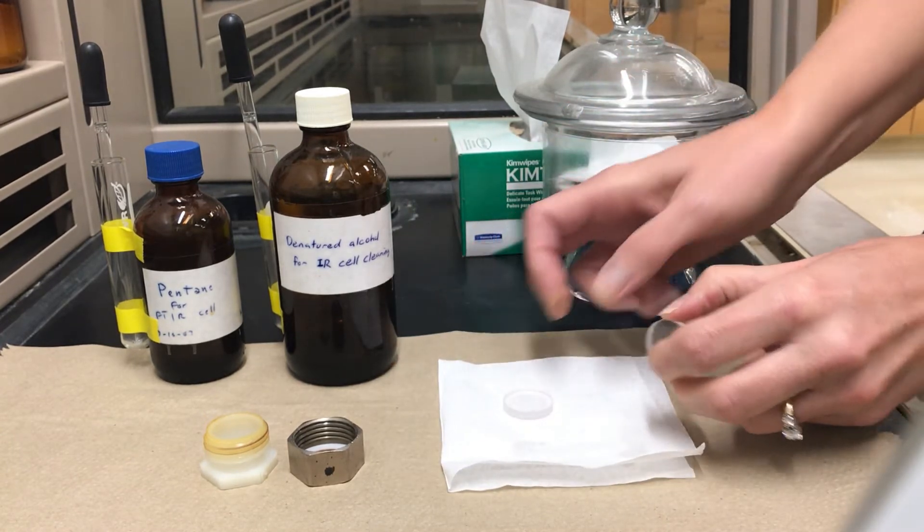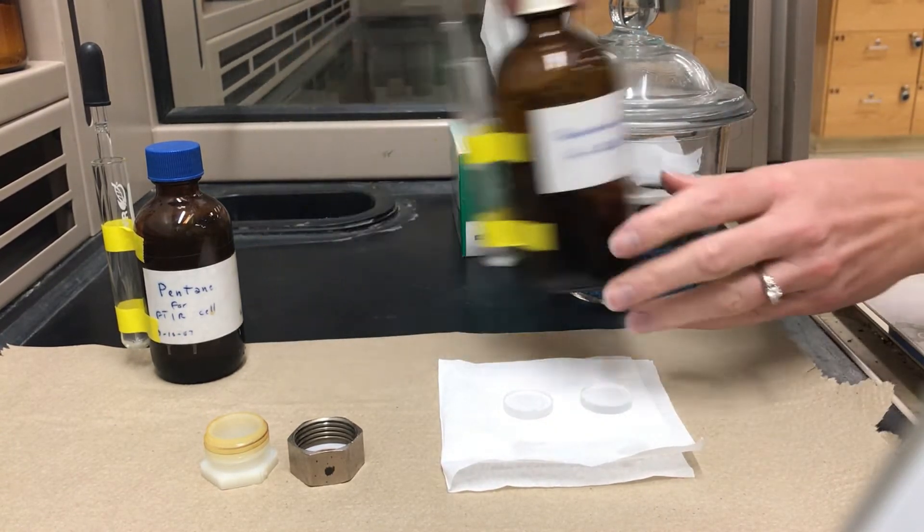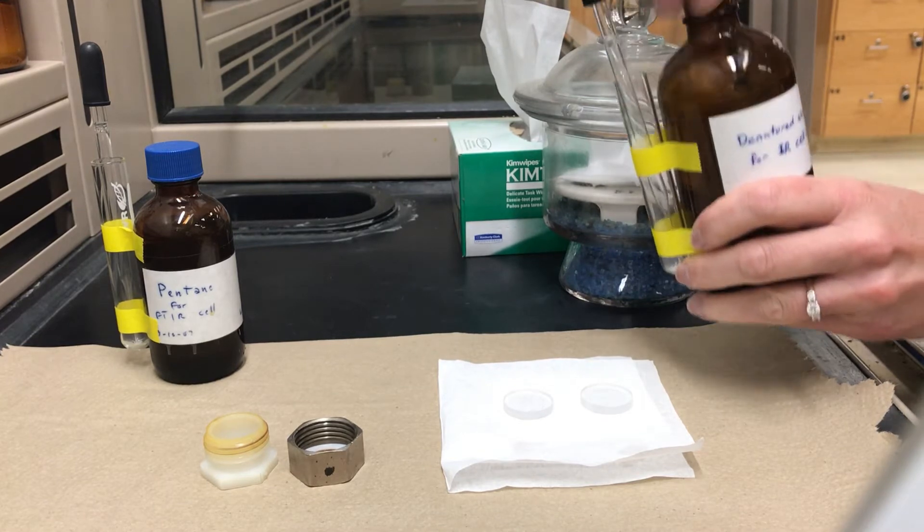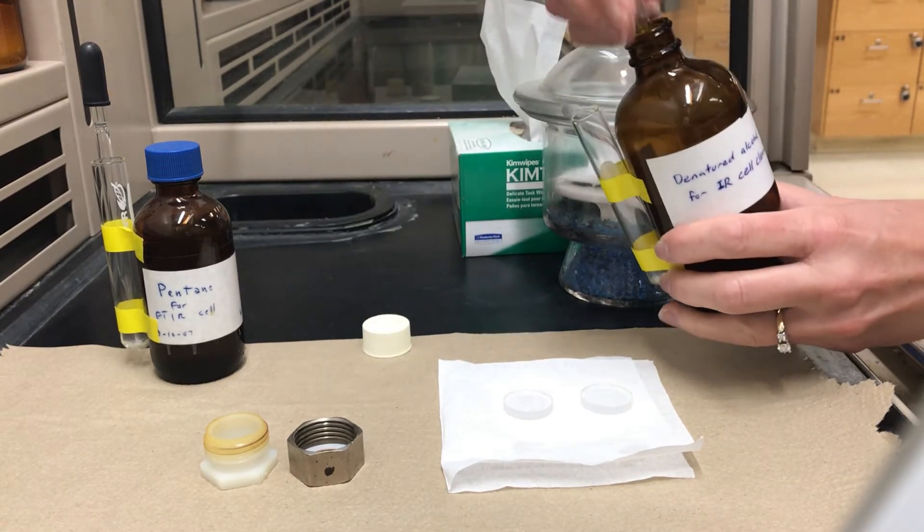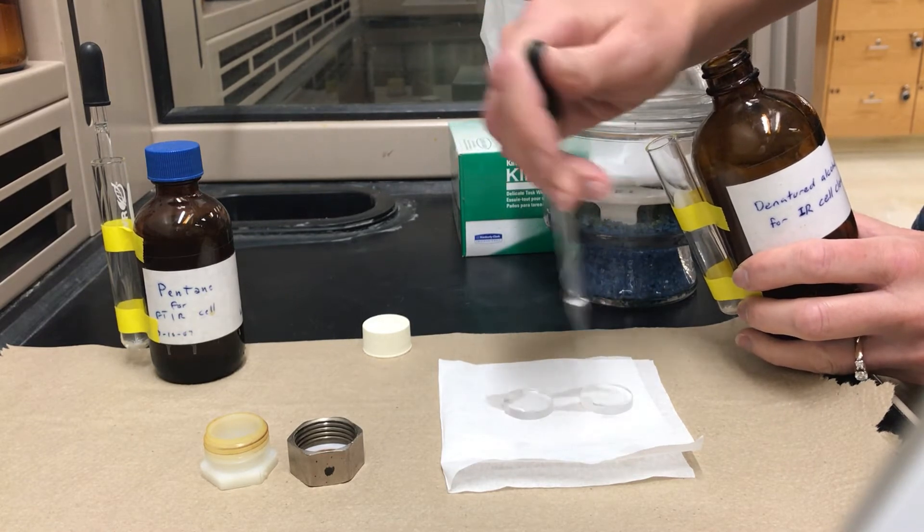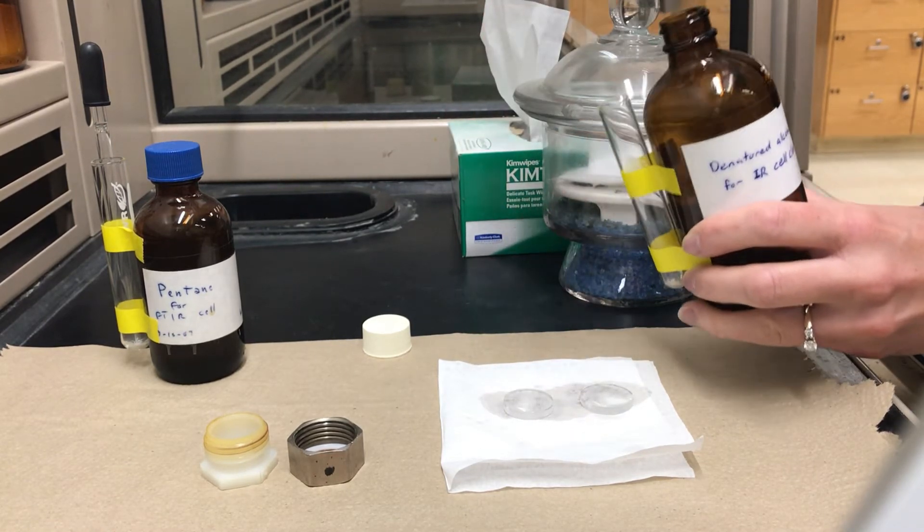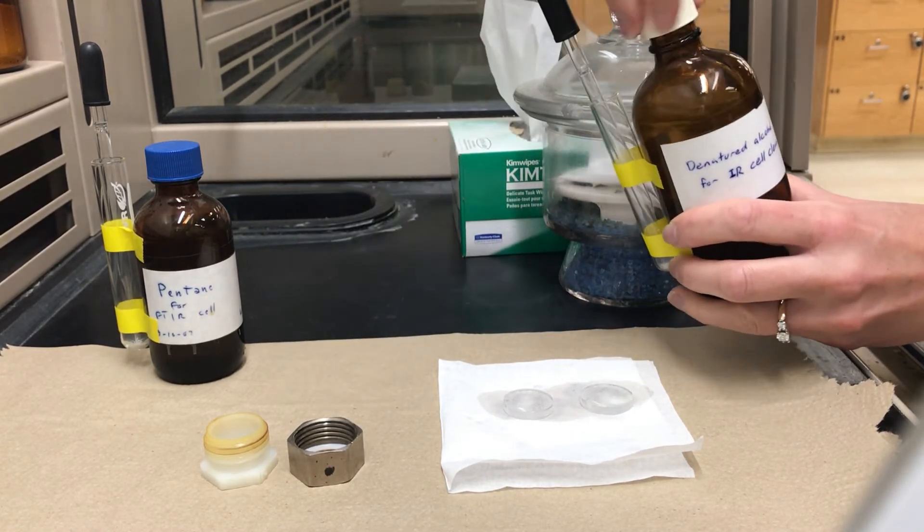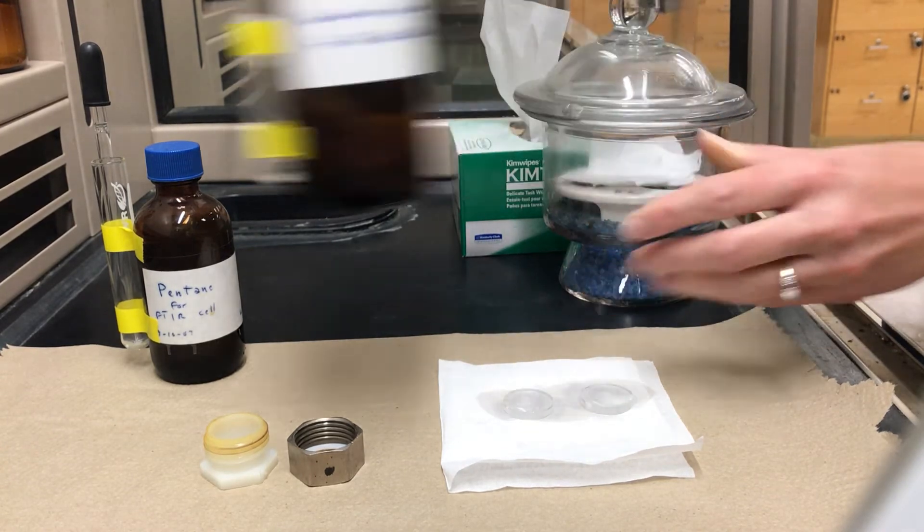That'll get the majority of the junk off. Then turn them upside down with the dirty sides up and we'll squirt a bunch of solvent on them to try to rinse off any residue. I'm first going to use some alcohol, some ethanol and that's good it dissolves a lot of things especially polar things.